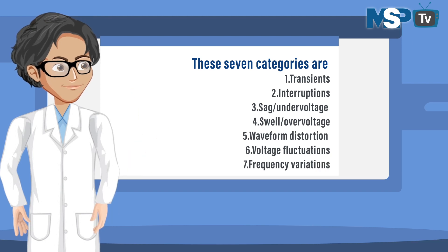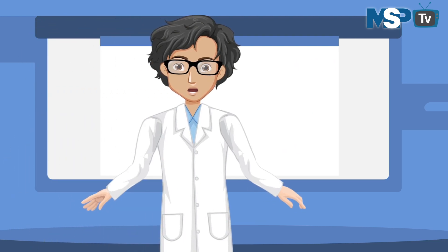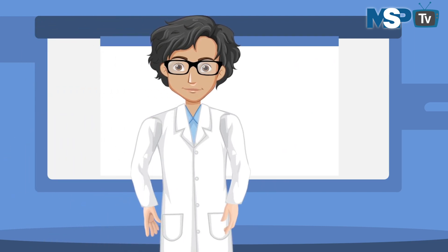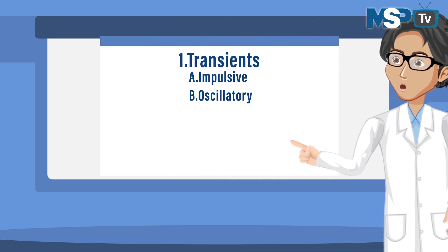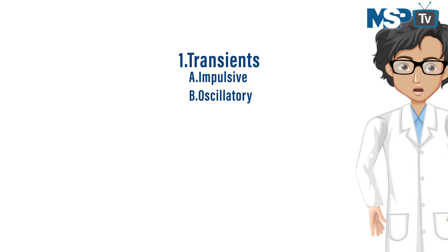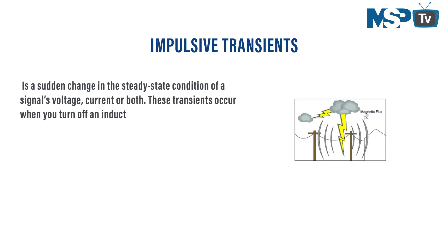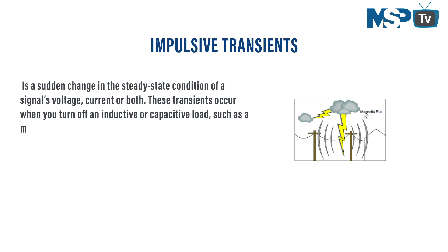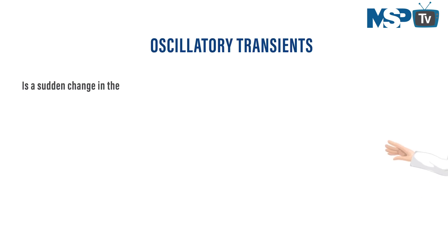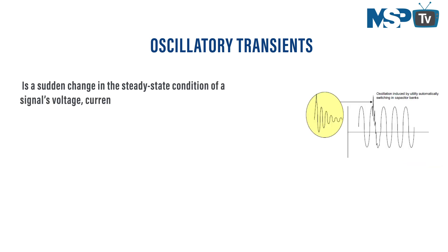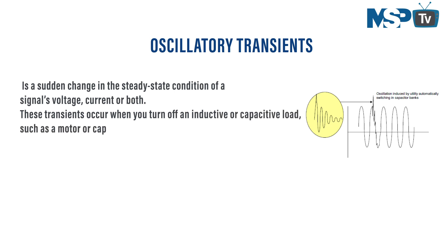Transients are the potentially most damaging type of power disturbance. They fall into two subcategories: impulsive and oscillatory. Impulsive transients are what we commonly call a power surge or spike — caused by lightning, poor grounding, switching of inductive loads, and electrostatic discharge. Oscillatory transients are a sudden change in the steady-state condition of a signal — voltage, current, or both. These transients occur when you turn off an inductive or capacitive load, such as a motor or capacitor bank.